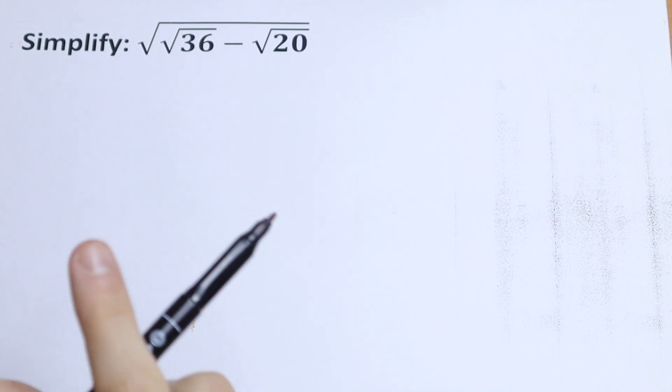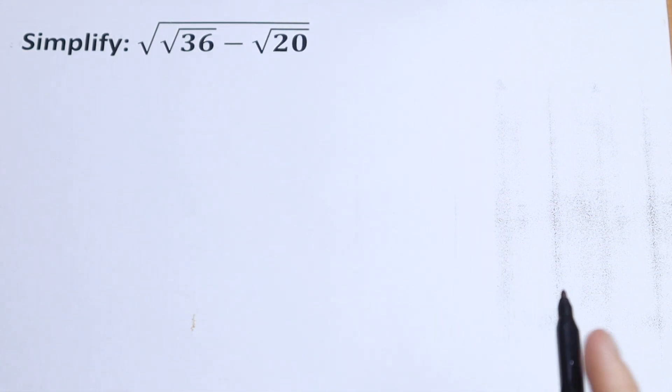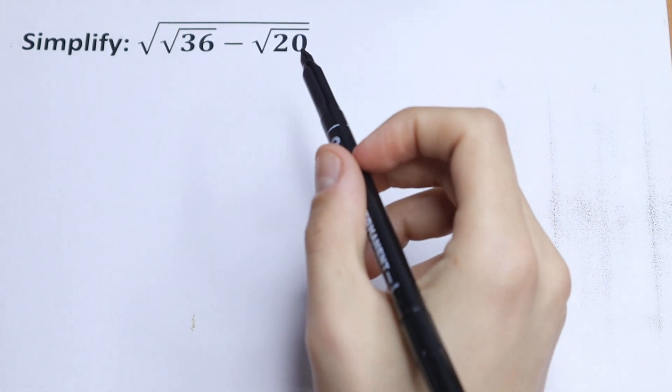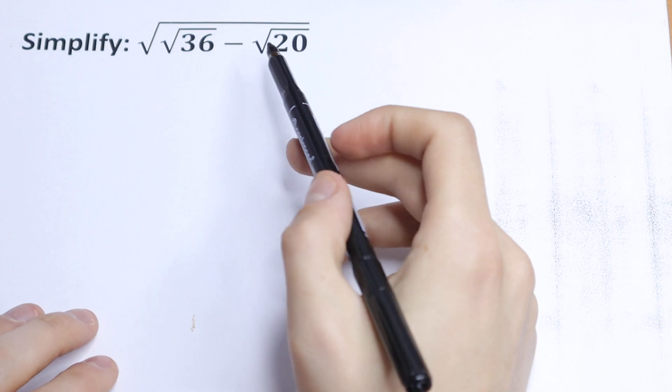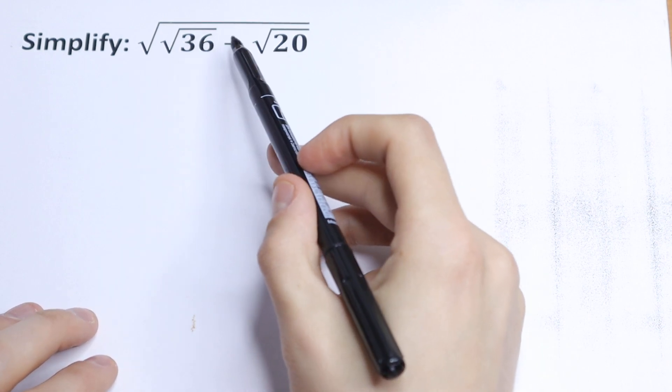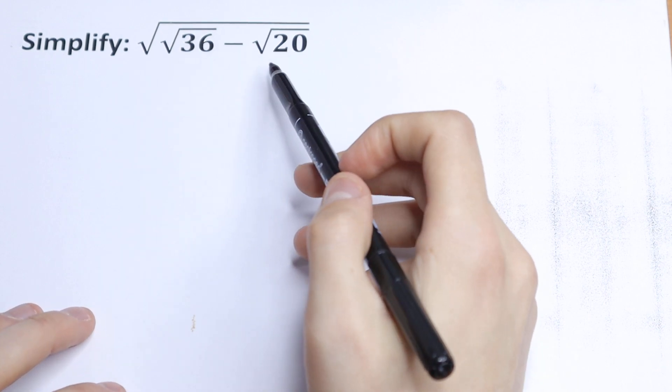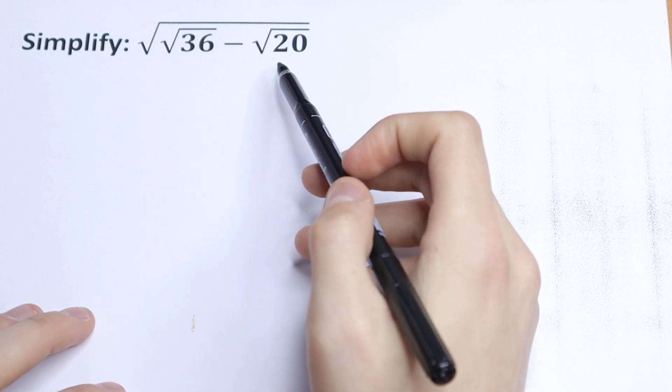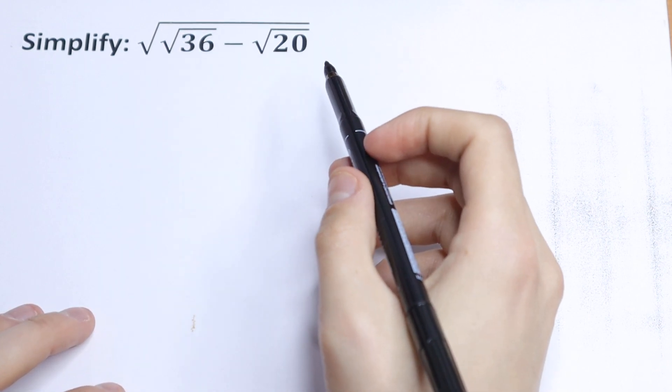Hello everyone, welcome back to MathMode. Here we have an interesting algebra problem. We need to simplify the square root of the square root of 36 minus the square root of 20. How can you do this?